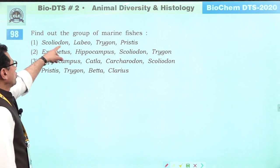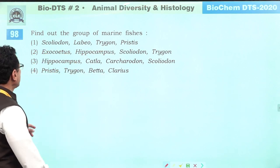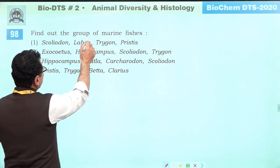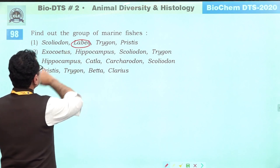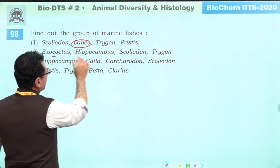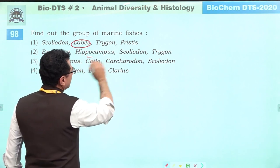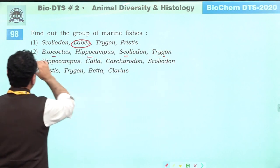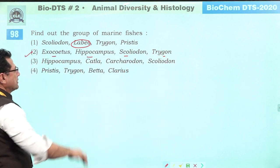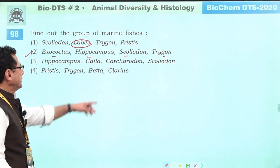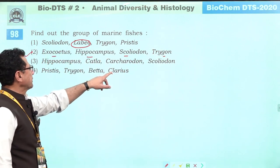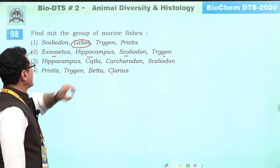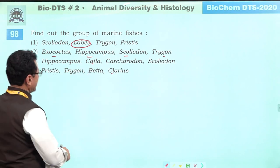Group of marine fishes: Scoliodon is marine, Exocoetus is marine, Hippocampus is marine, Trigon is marine. Labio is a freshwater fish. So the group that is all marine — answer is second.